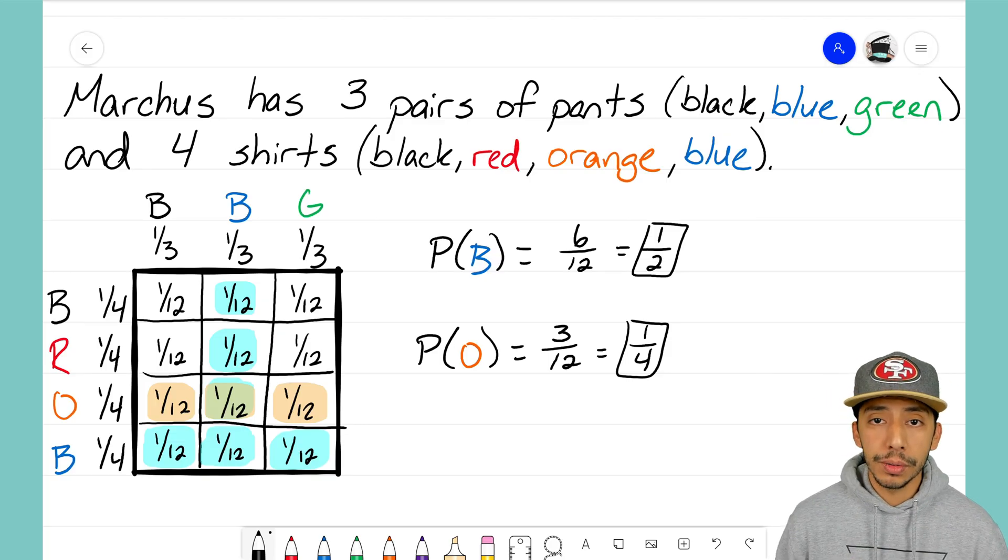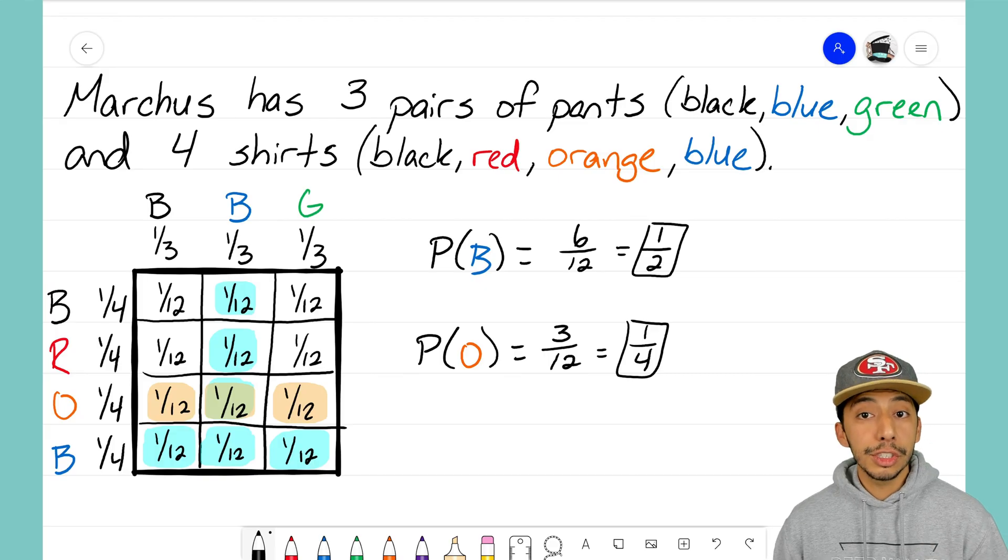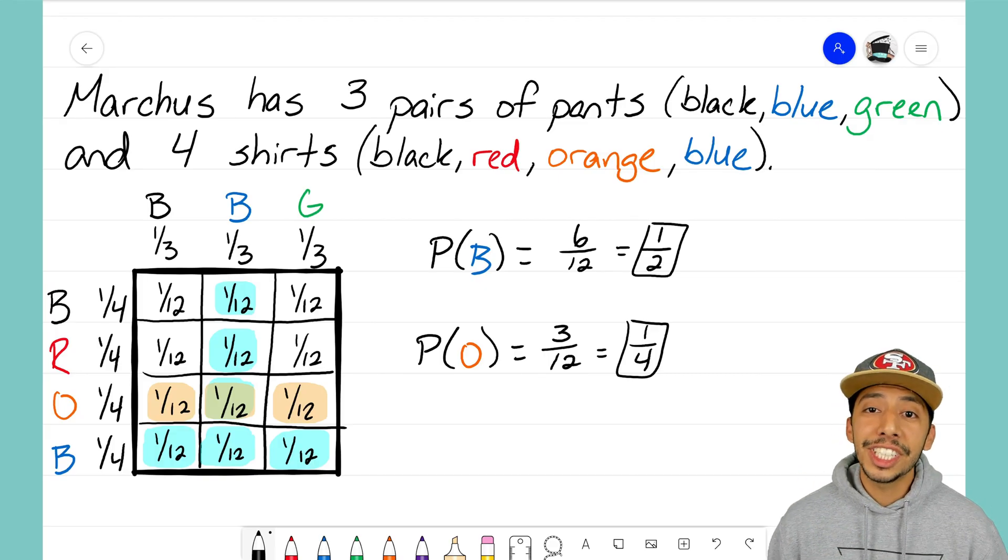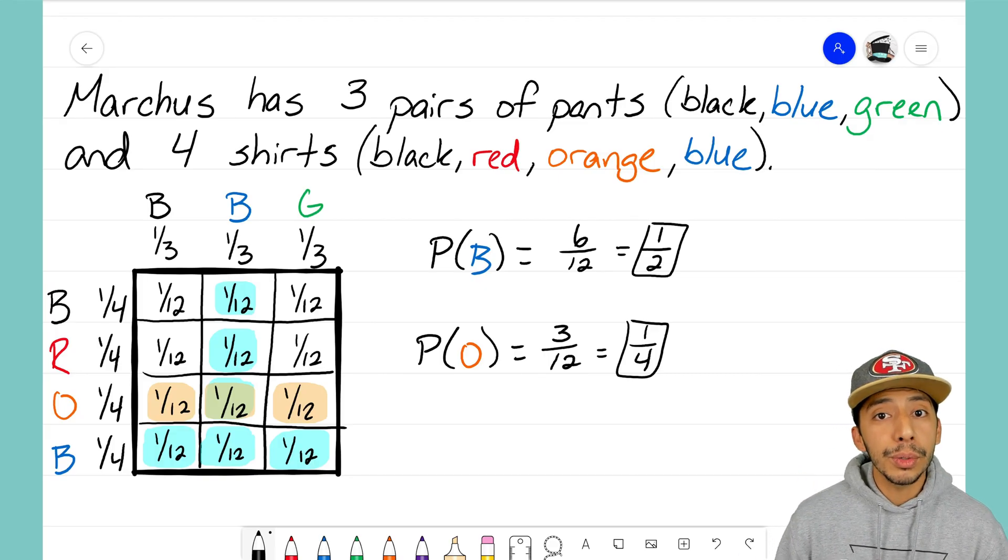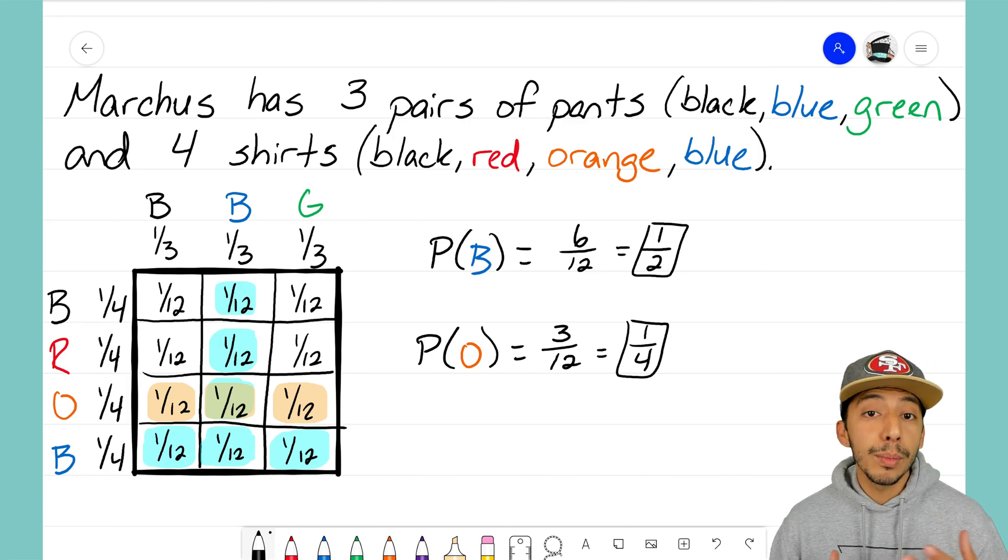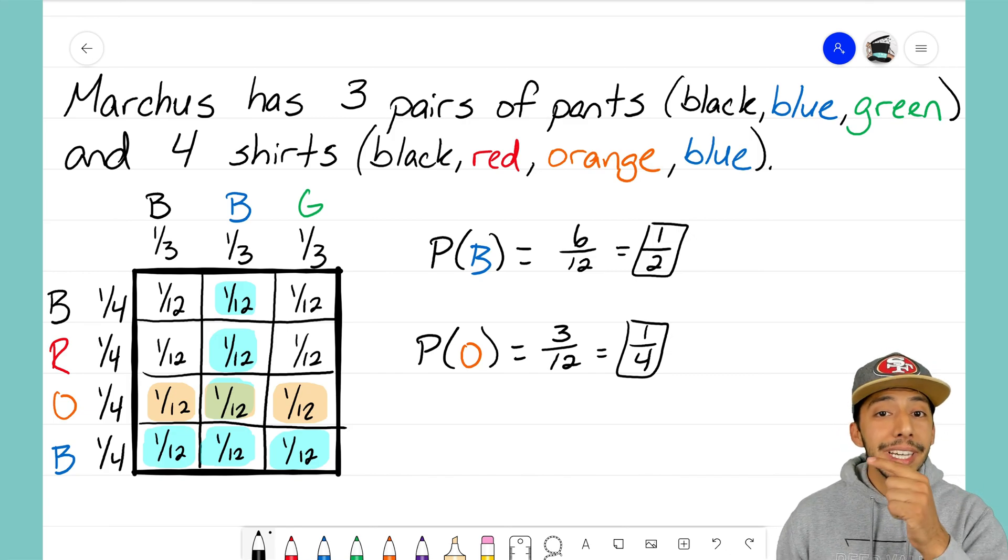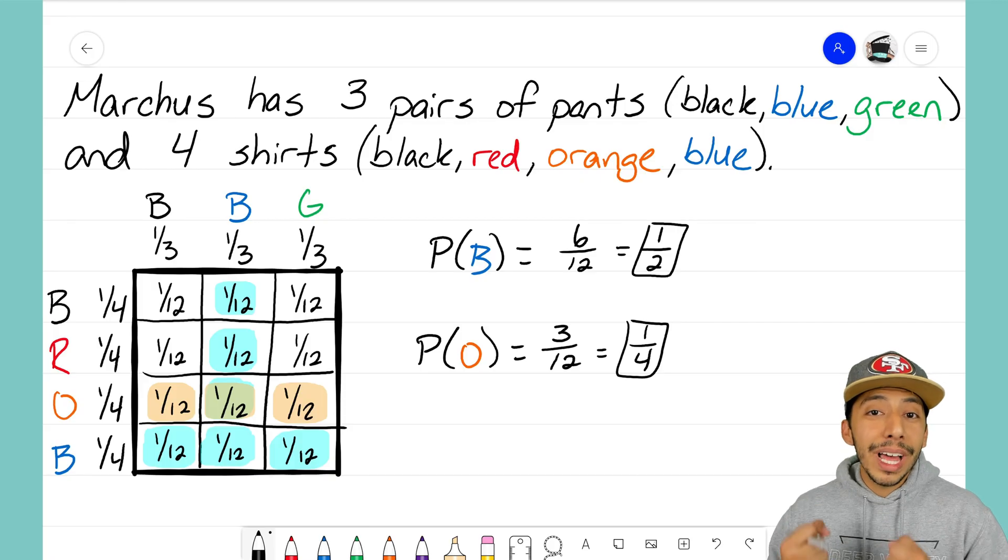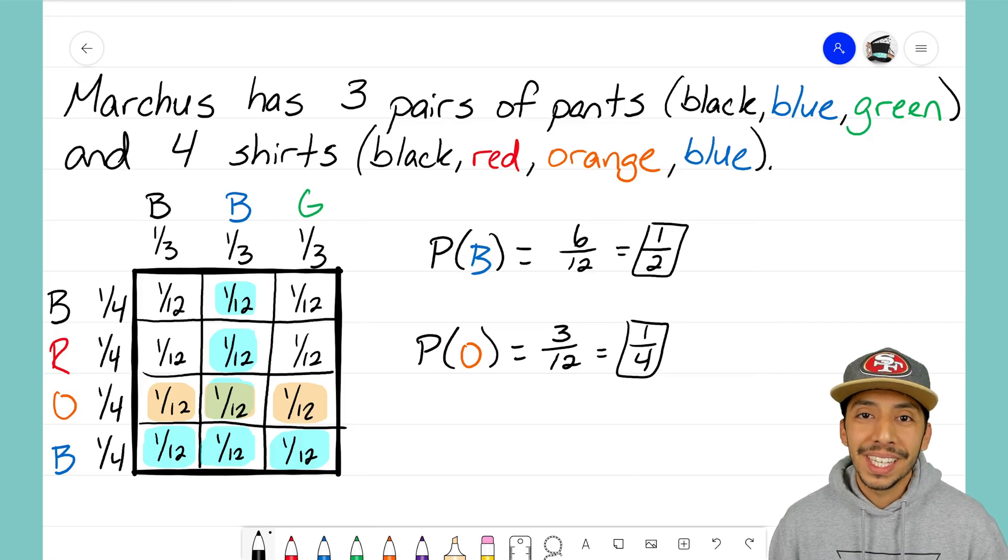So there you go. The area model helps you map out all the possible different combinations that you might have. It doesn't solve the problem for you, but it shows you all the outcomes so that when you get a question such as what's the probability of him wearing blue or what's the probability of him wearing orange, you just look at that area model and pull out the information that you want. It's that math magician, and I'll see you on the next video.